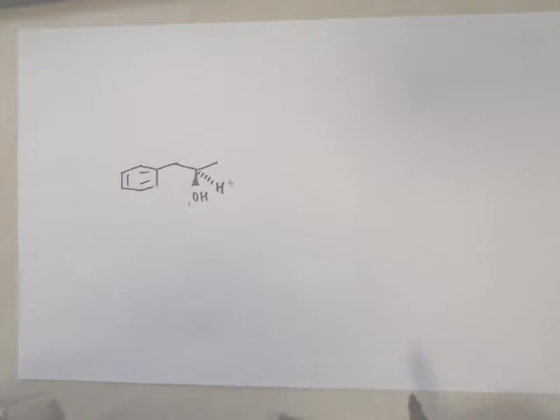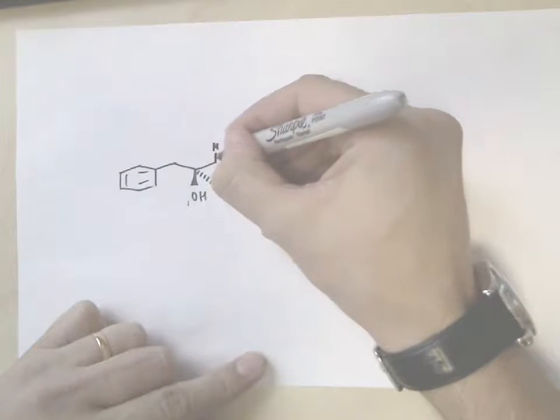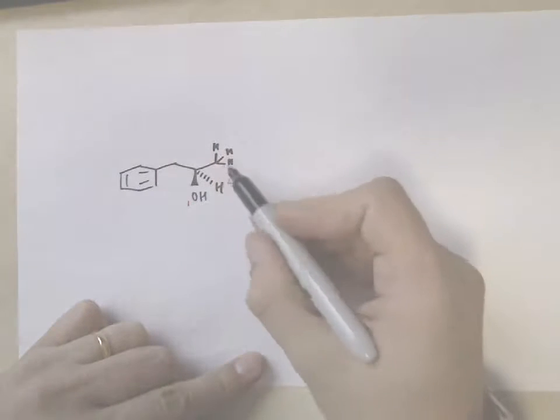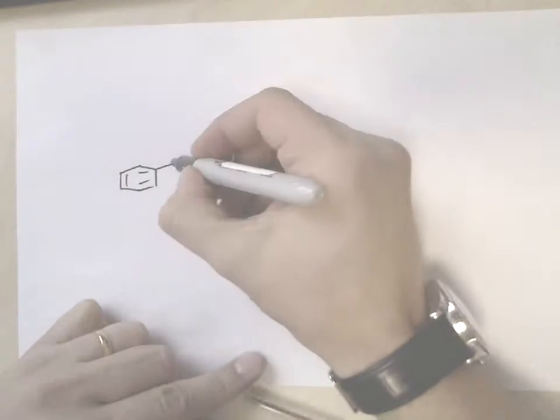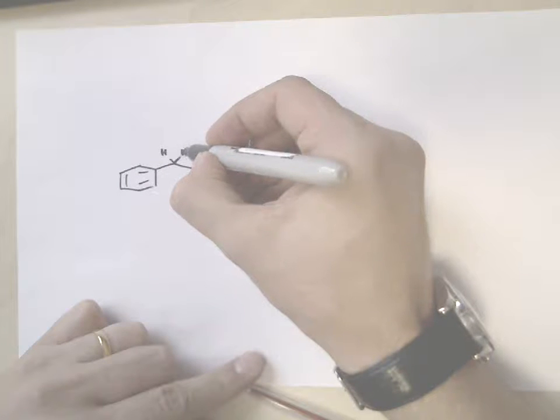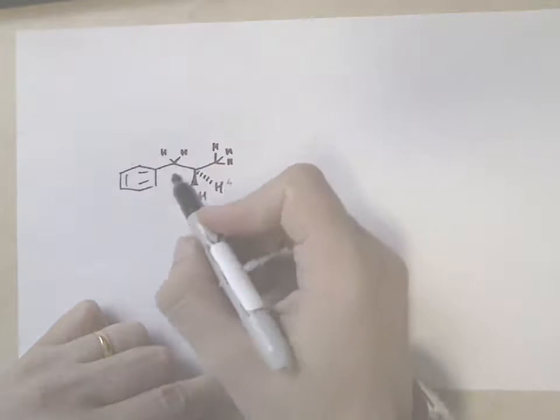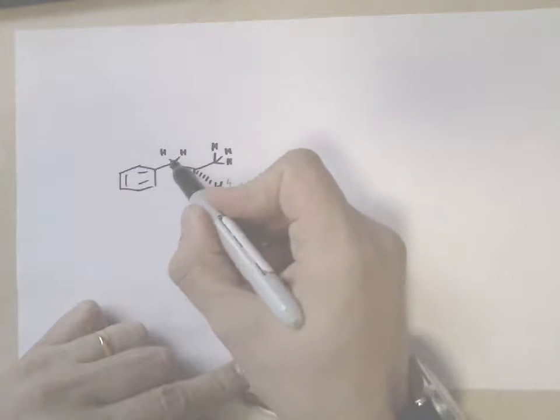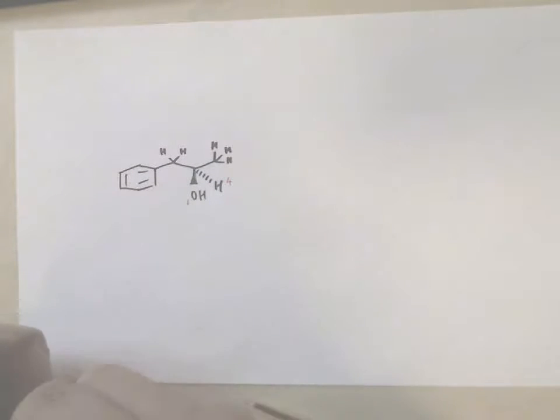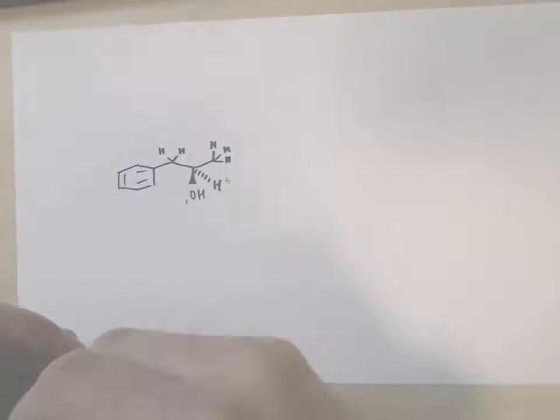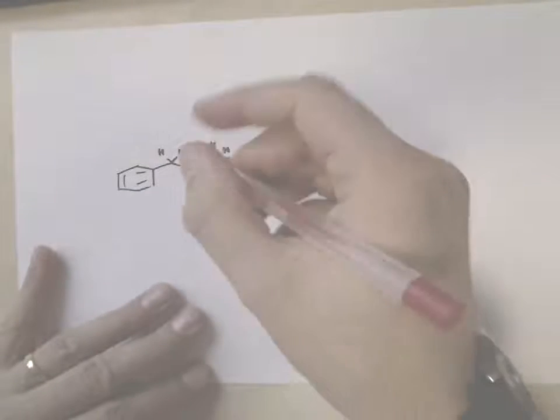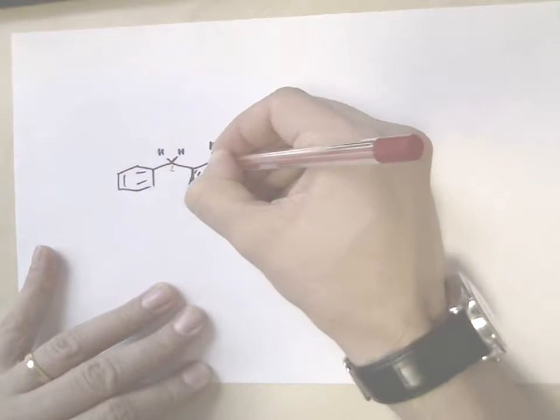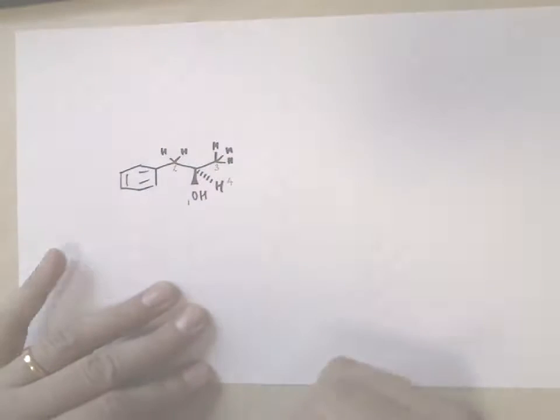But if you look more closely, this carbon is a CH3, has three low-priority atoms attached to it, whereas this carbon only has two hydrogens and another carbon. So this group over here has more higher-priority atoms attached to it than this one. So we say that this group over here is two, and this is three.